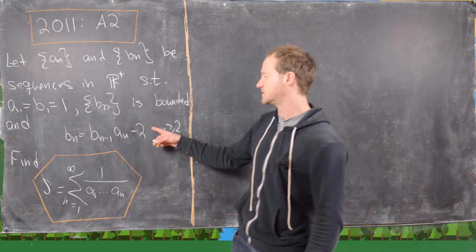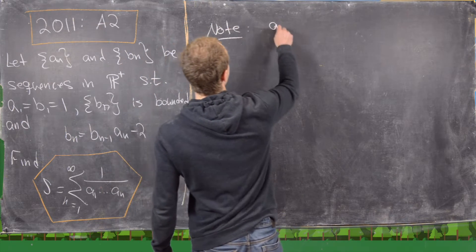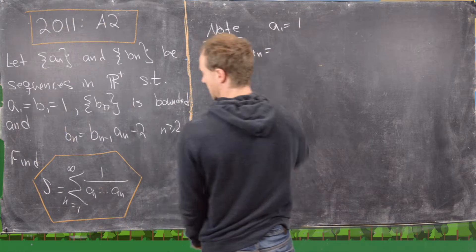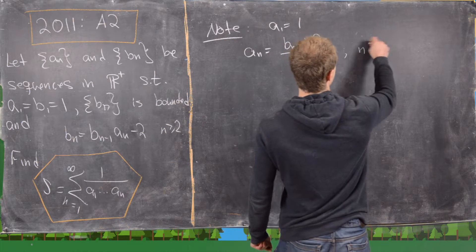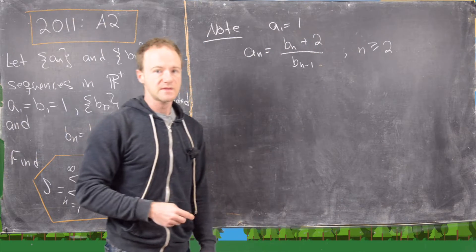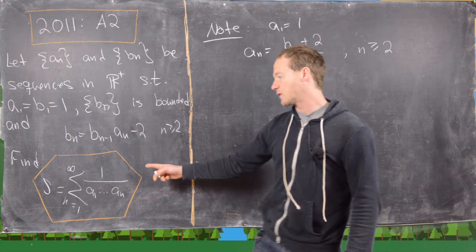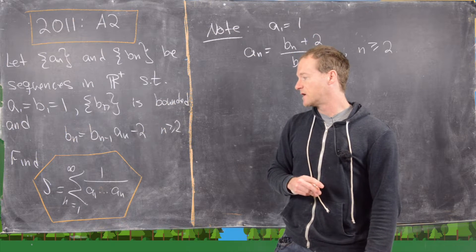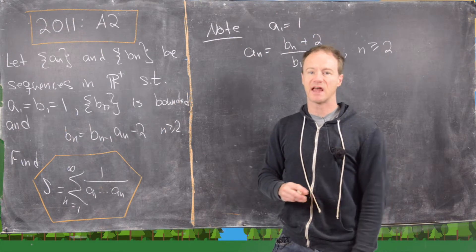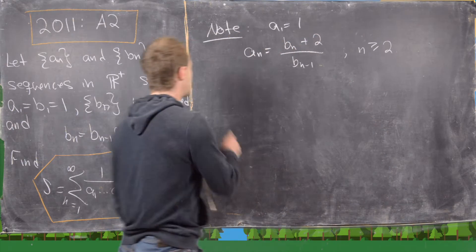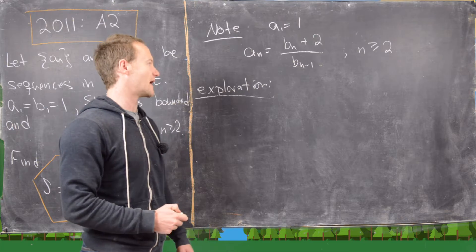The first thing we can notice is we can take the recursion equation and solve it for AN, giving us A1 equals one and AN equals BN plus two over BN minus one for all N greater than or equal to two. Another thing to notice is that nothing is said about the sequence BN except that it's bounded. Yet we are asked not only to show convergence but to find the value of the sum. That means the value must be the same regardless of which bounded sequence we have.